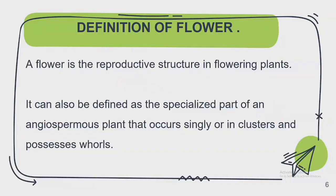A flower is a specialized part of an angiosperm that may occur singly or in clusters — meaning it could be individual or it will come in groups.